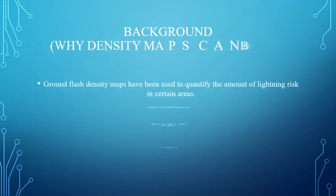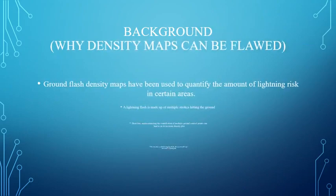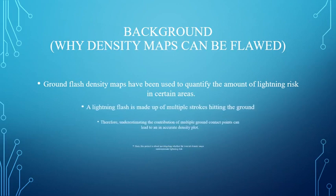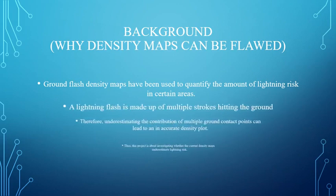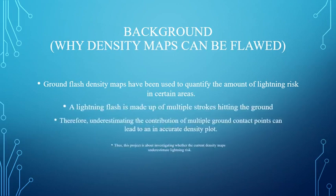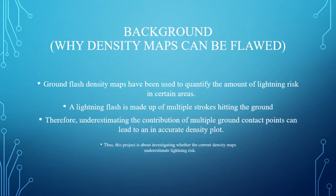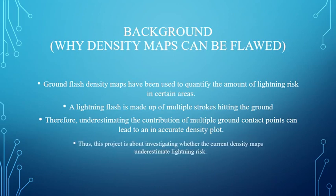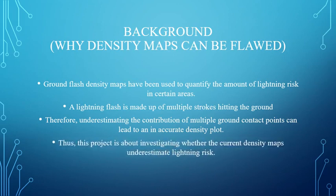This is the background of the project. Ground flash density maps have been used to quantify the amount of lightning risk in certain areas. A lightning flash is made up of multiple strokes hitting the ground. Therefore, underestimating the contribution of multiple ground contact points can lead to an inaccurate density plot. Thus, this project is about investigating whether the current density maps underestimate lightning risk.